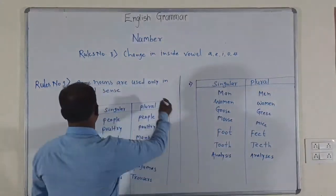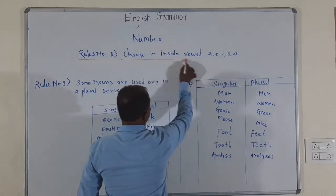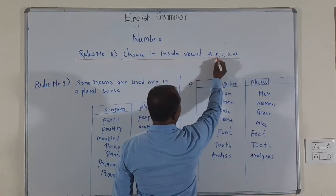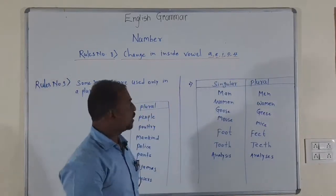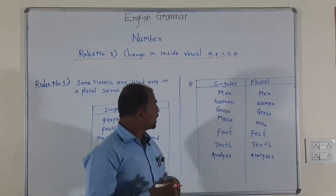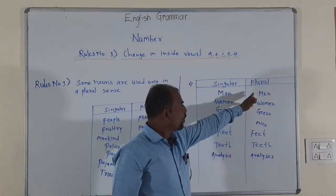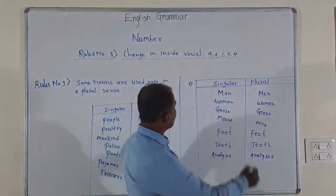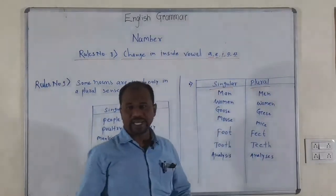Rule number eight: change in inside vowels A, E, I, O, U. When we have to change the vowels, we make the plural form. For example, it is a singular form and plural form — M, A, N — man.